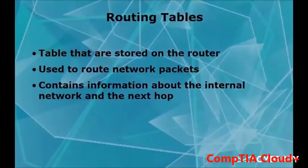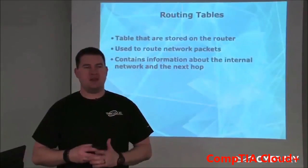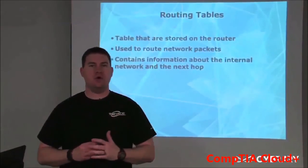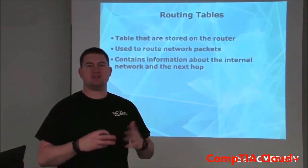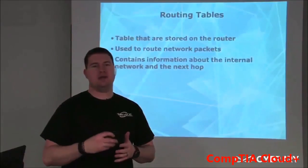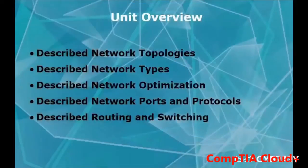Routing tables are stored on the router and are basically a table of information that allows the router to direct traffic to a device or host through a quick means. The purpose is so that the internal network knows the next hop outside of their network — whether going to Comcast, Verizon, Google, or another destination — so packets don't have to search out the next network. In this module we covered network topologies, types, optimization, ports and protocols, and routing and switching.